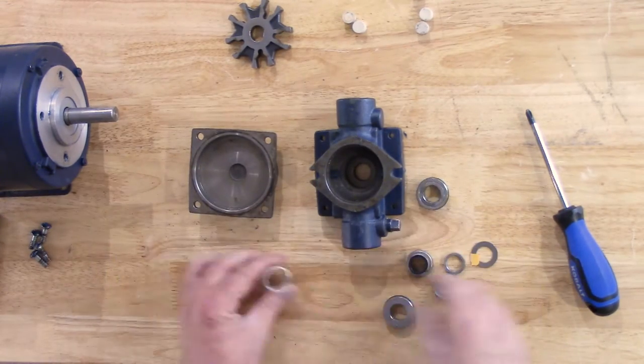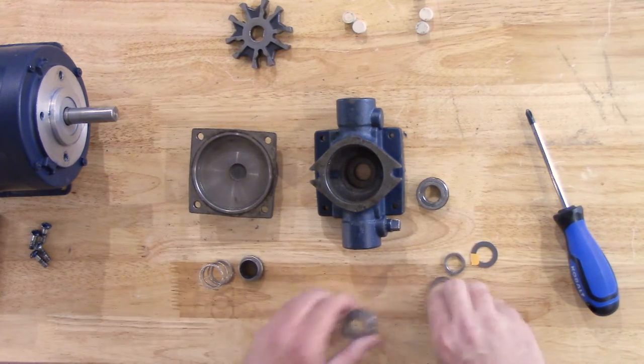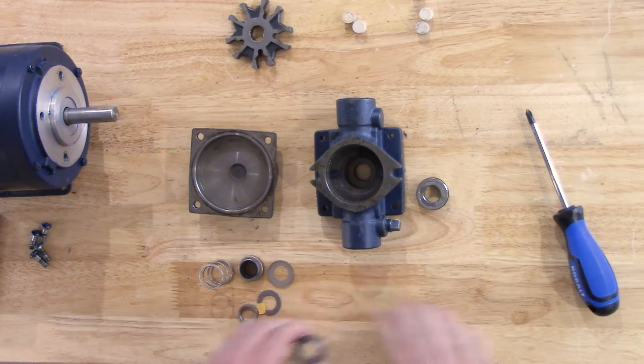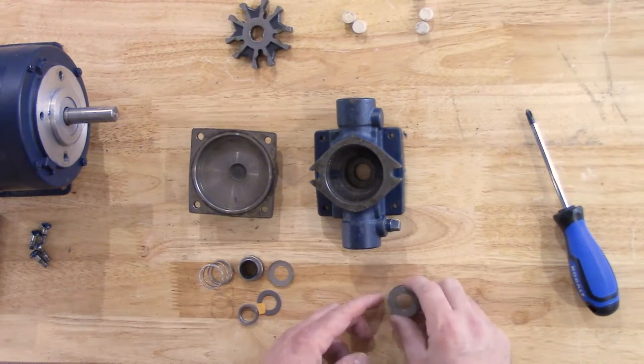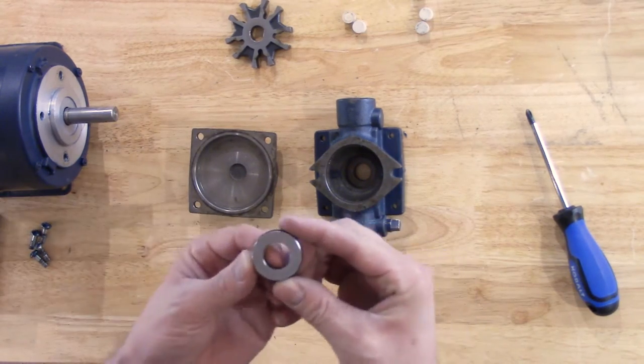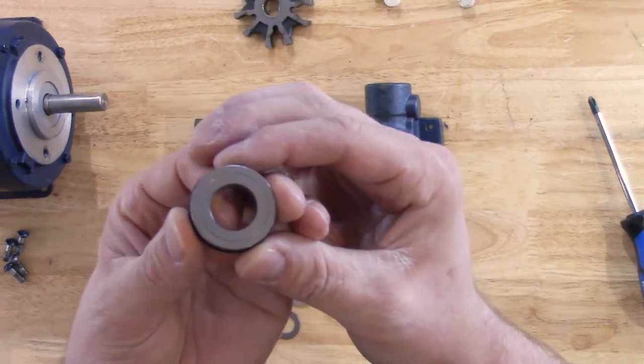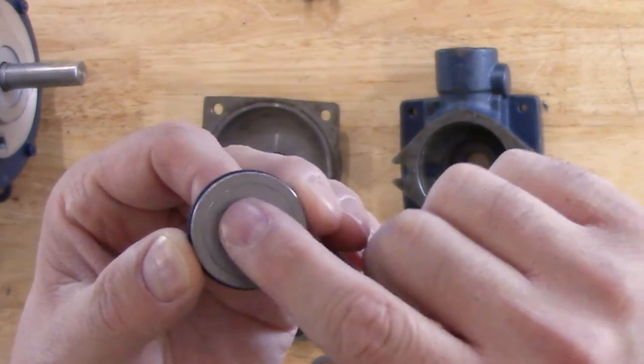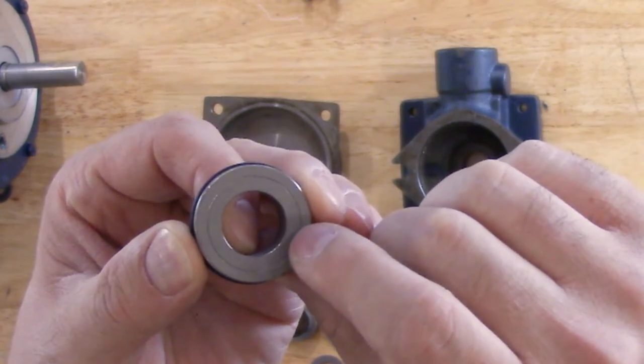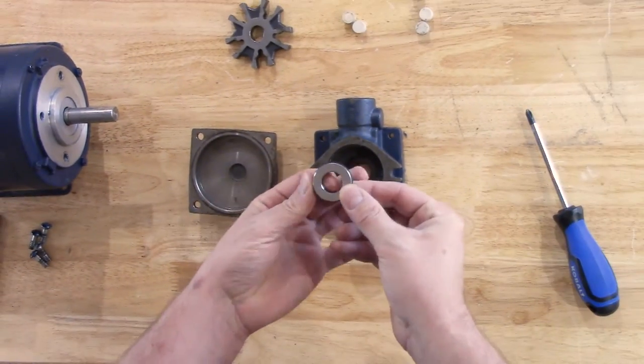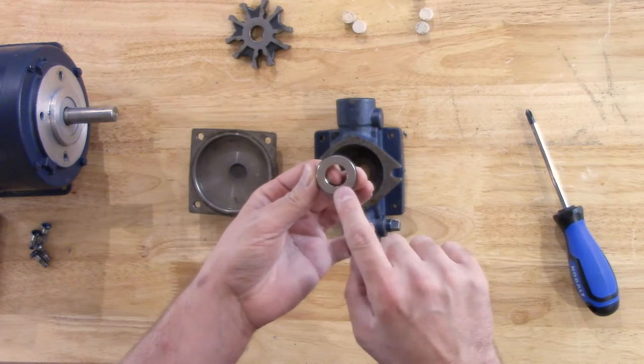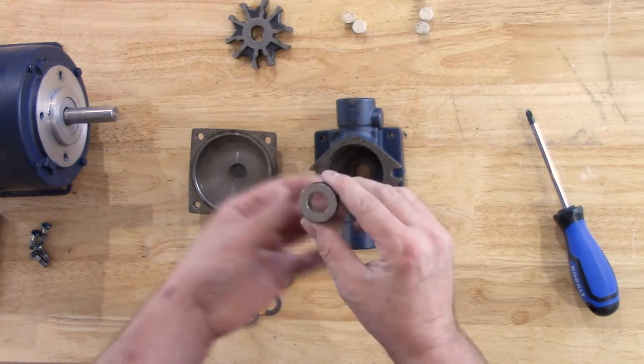Once we have our new seal kit parts out, we can set the shaft side over to the side as we don't need those currently. We can take our old seal and set it out of the way. Now that we have our new seal, we want to pay special attention to the side that has the groove in the seal. This side will go face down inside the pump to where the shiny side of this will be facing our motor.